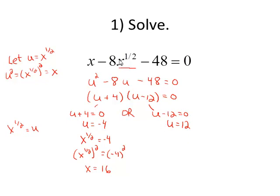When I come back to check that one, let me check that one first. If I put in 16 for x, I have 16 minus 8 times 16 to the 1 half power minus 48, and I want to see if that equals zero. 16 to the 1 half power is the same as the square root of 16, so that's the same as 4. 16 minus 8 times 4 minus 48.